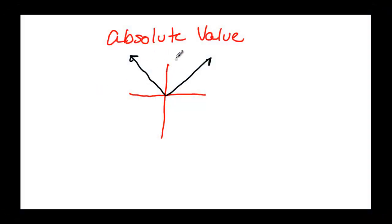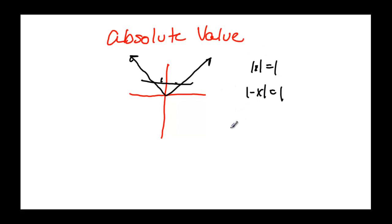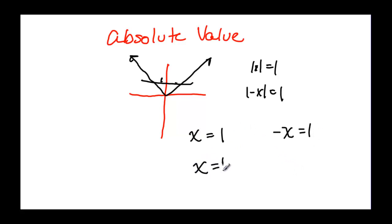Here's an absolute value — a real rough sketch. What I want you to notice is that when I have a y value, the absolute value of something, we'll call it x, is equal to 1. But the absolute value of negative x is also 1. So when solving an absolute value, either x equals 1 or negative x equals 1. We typically say x equals 1 for the original problem, and x equals negative 1 — it doesn't matter which side the negative is on, just one side has to be negative.